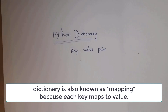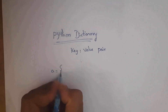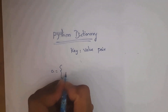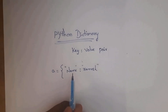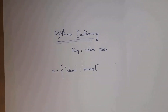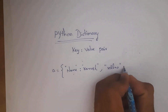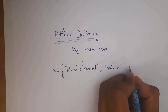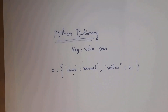Dictionaries are used to store data as key-value pairs. Same as a set, we represent dictionaries in curly braces. For example: open curly braces, then write 'name': 'ramesh' — here 'name' is the key and 'ramesh' is the value, separated by a colon. Then a comma, and another key-value pair: 'roll_number': 21, where 21 is an integer so no double quotations needed. Close curly braces — this is an example of a dictionary.